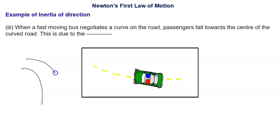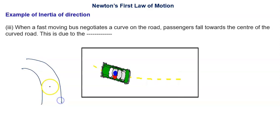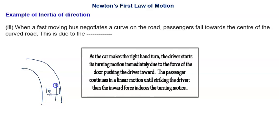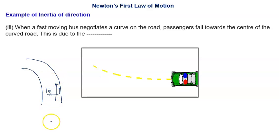Suppose this is the turn and you sit in the car. Now when the car is moving in a straight line path, all parts of your body — whether the upper part or lower part — have the tendency to move in the forward direction.